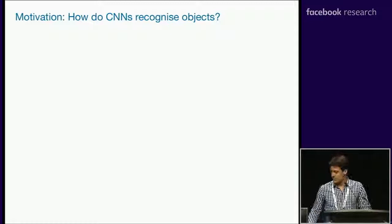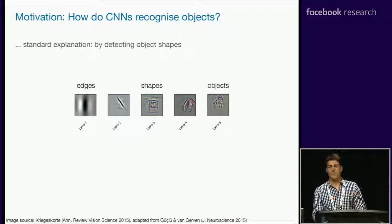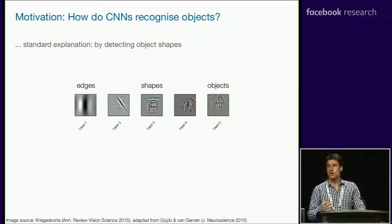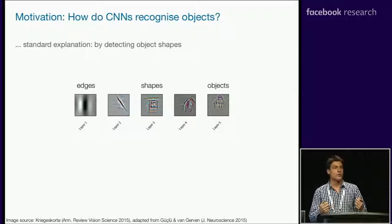If we look at different explanations, the standard textbook explanation tells us that CNNs detect object shapes and object parts. For example, in the first layer they detect edges, then they group together a bunch of edges to form a door. Once they've detected a shape like a door or a couple of windows, they can again group these basic parts and shapes together to form, for example, a house. So CNNs recognize objects by detecting object shapes — this is the standard explanation.